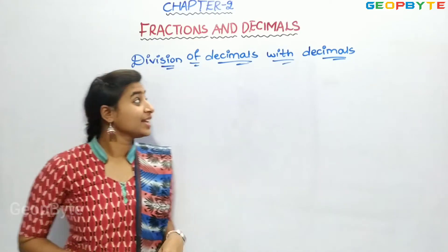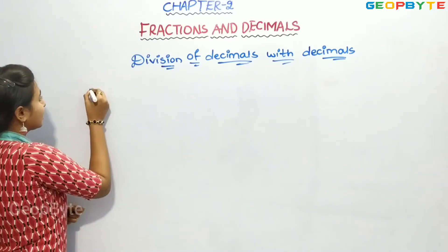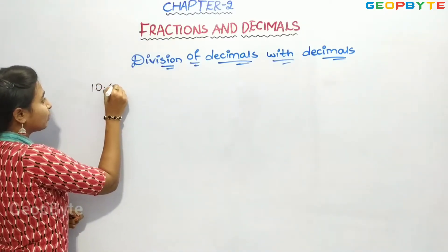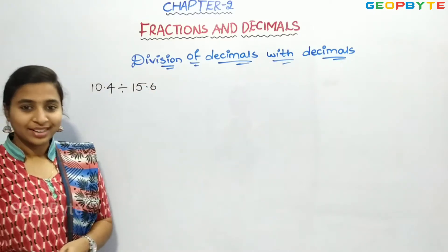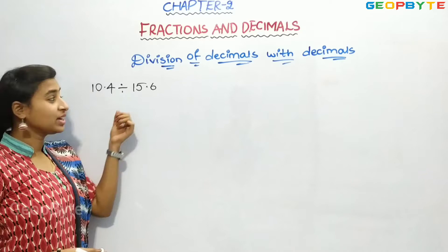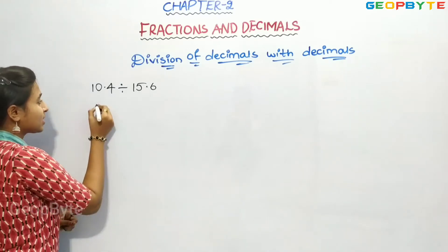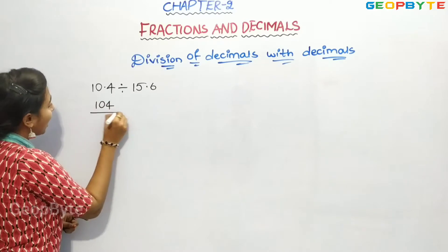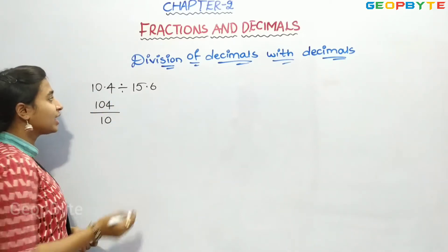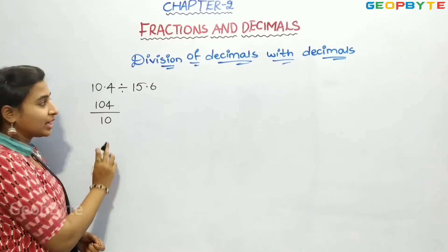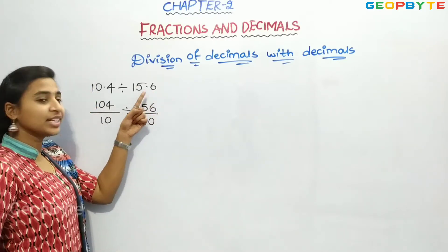Now let us see division of decimals with decimals. Let us take 10.4 divided by 15.6. I will convert them into fractions — that is 104 by 10, because we have one digit after the point. This also becomes 156 by 10, as we have one digit after the point.